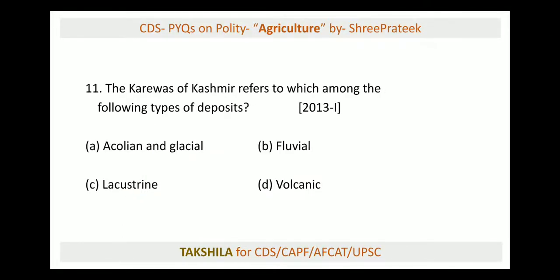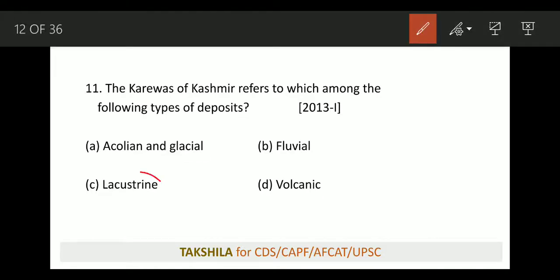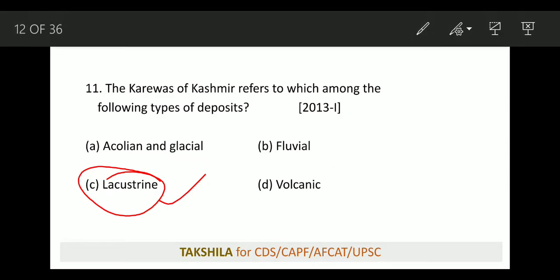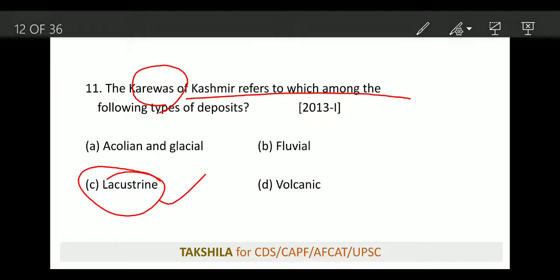Next: Karevas of Kashmir refer to which type of deposit? If you look at Indian physiography and geography in NCERT, Karevas are basically found in Kashmir. They are lacustrine deposits of the Jhelum River — answer is option C. This is a very good question asked 2-3 times by UPSC. Karevas are used in the Isher Pore/Pampore region of J&K and are well known for saffron cultivation.